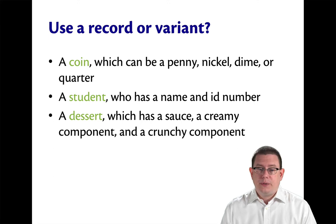What about a student? So a student could have a name and an ID number. Would you use a record or a variant for that?